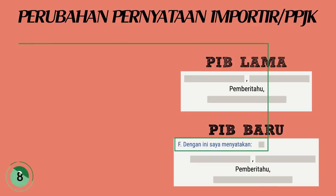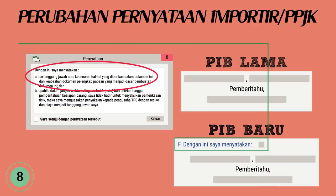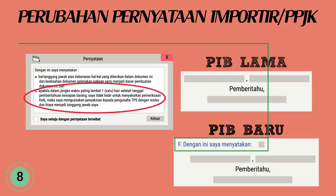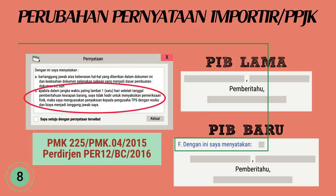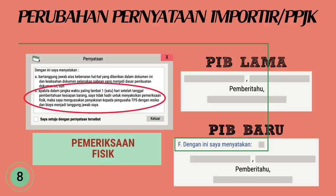Perubahan pernyataan importir atau PPJK: Pernyataan A mencakup kebenaran hal-hal yang diberitahukan dalam PIB, keabsahan dokumen pelengkap pabean yang menjadi dasar pembuatan PIB, serta pernyataan yang mengikat pemberitahu bahwa data dalam PIB dan dokumen dasar pembuatannya sah dan benar. Pernyataan B mencakup kesediaan menyiapkan barang untuk diperiksa pada waktunya, menguasakan kepada TPS untuk menyaksikan pemeriksaan apabila tidak dapat menyiapkan barang pada waktunya, mengakomodasi PMK 225/PMK.04/2015 dan PERDIRJEN PER-12/BC/2016 untuk pemeriksaan fisik.